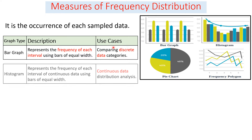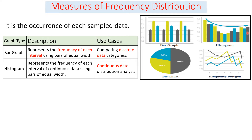The second is the histogram. As you see in the picture, the histogram represents the frequency of each interval of continuous data using bars of equal widths. There is no gap between the bars in a histogram, which makes it particularly suitable for representing continuous data distributions.